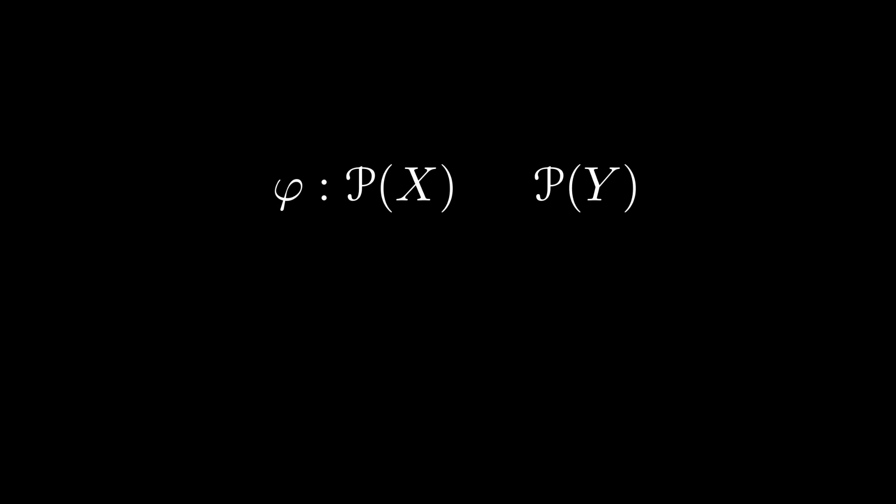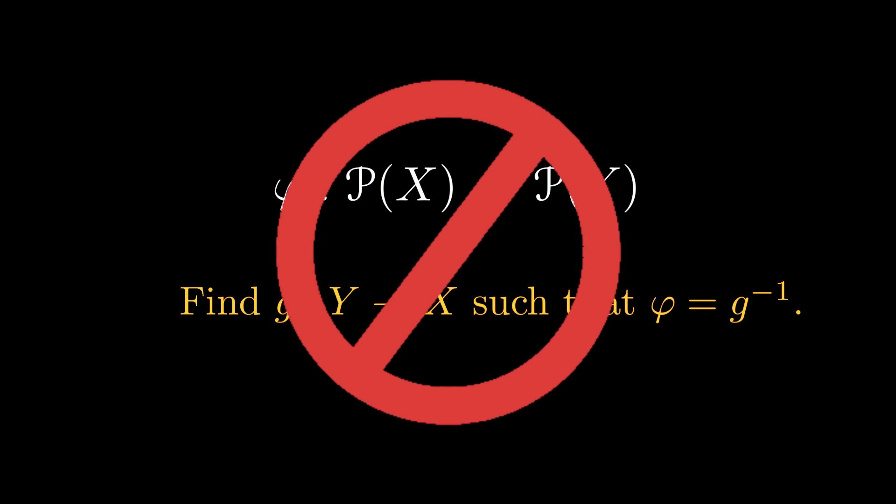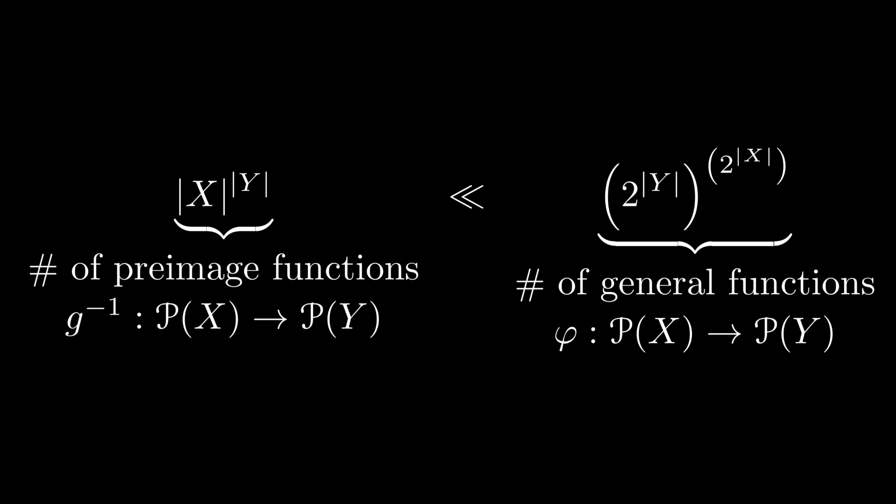Suppose we're given the power set of X and the power set of Y, and I describe some function phi from the power set of X to the power set of Y. How do you find a backwards-pointing function g between the underlying sets such that phi is equal to the preimage of g? At this level of generality, the answer is simple. You just can't. A relatively straightforward combinatorics argument shows that preimage functions are actually quite rare among maps between power sets.